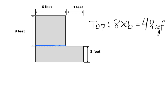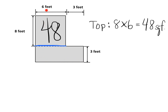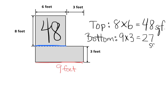The top rectangle is 8 by 6, which is 48 square feet. Now for the bottom rectangle, one side length is three. We can see that going all the way up, six plus three is nine feet, so the bottom dimension is nine. That tells us the bottom rectangle is 9 times 3, which is 27 square feet.